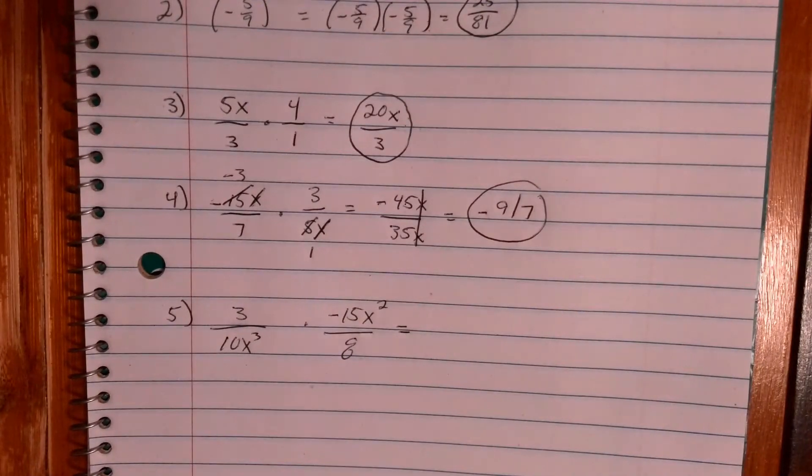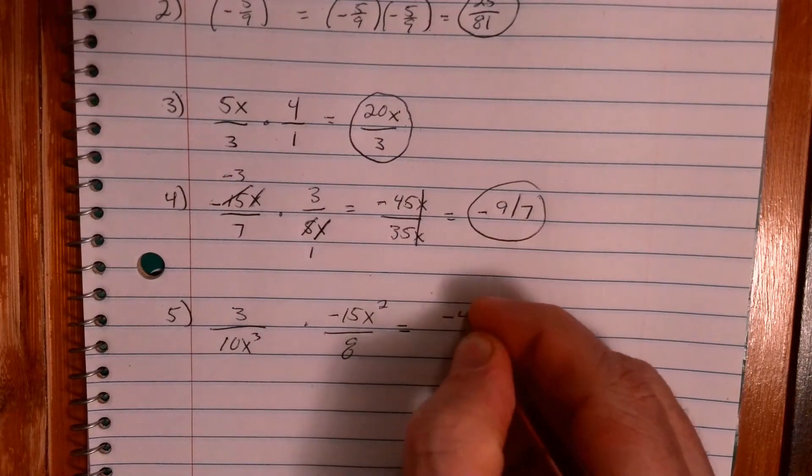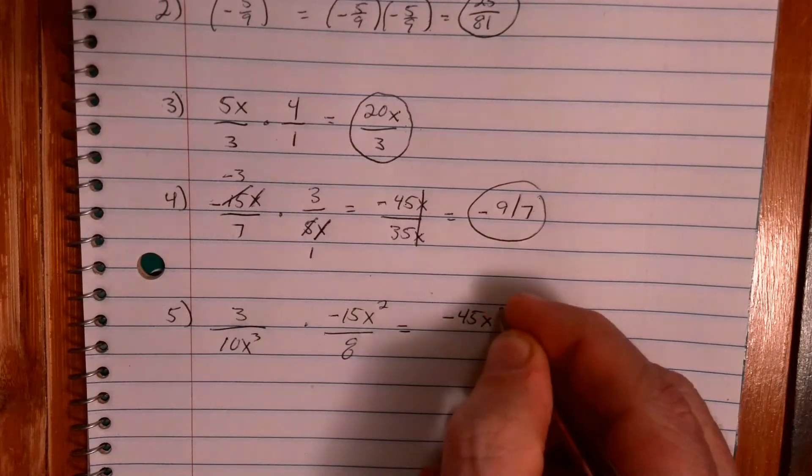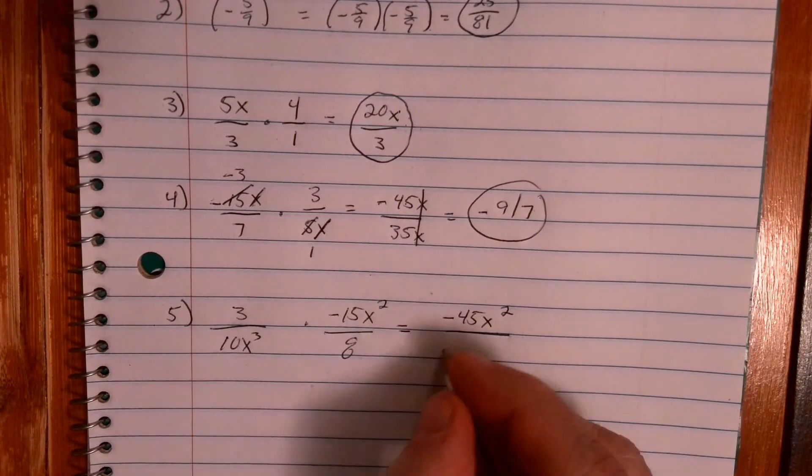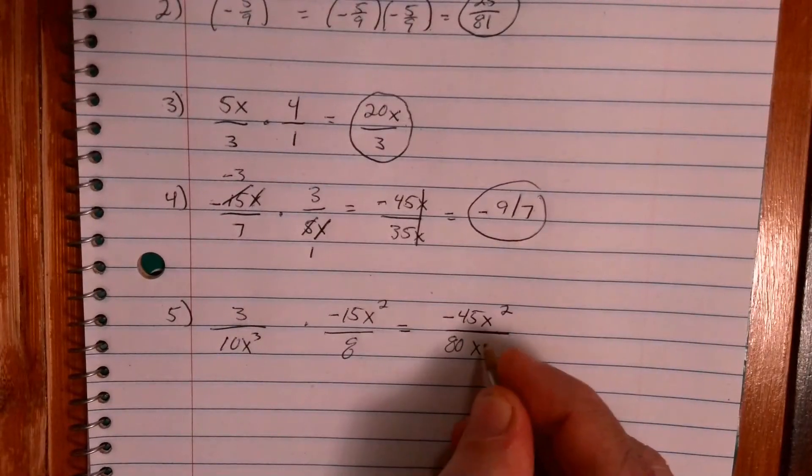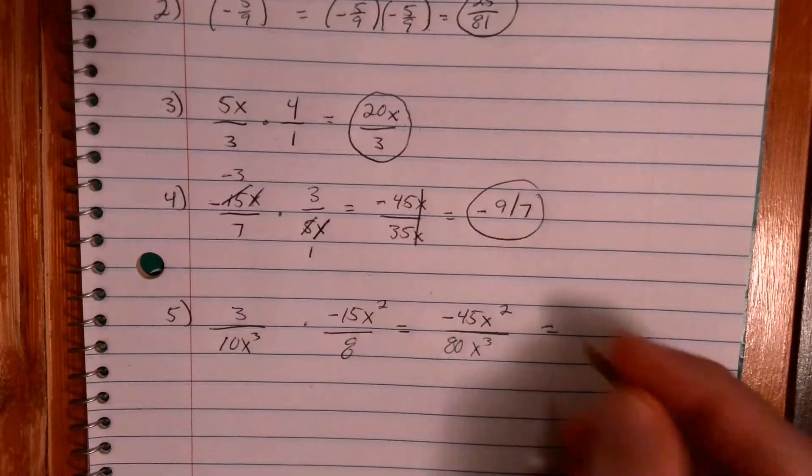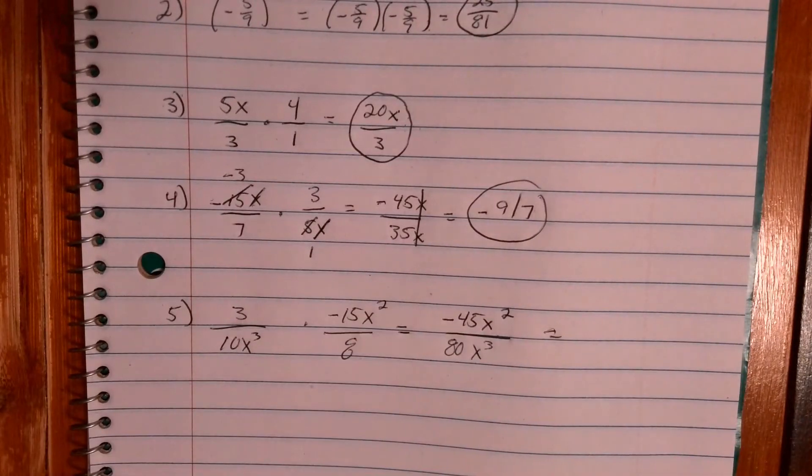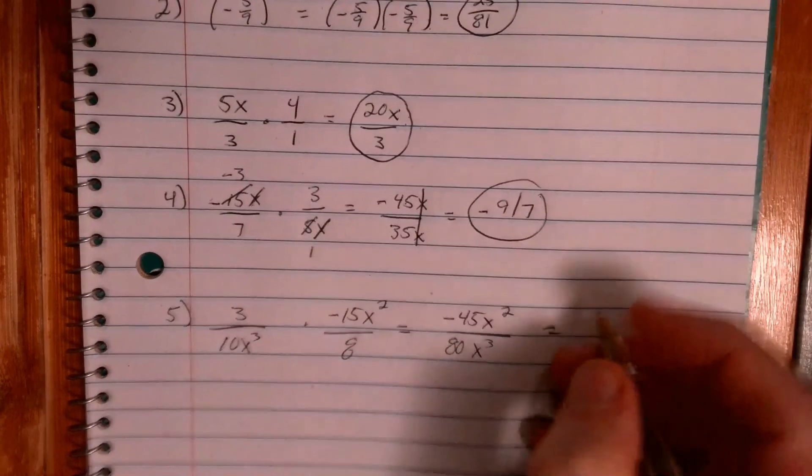So first, if you're not a canceling person, right, if you just want to multiply straight across, we can, right? So we can take 3 times negative 15 to make that negative 45x squared over 10 times 8 is 80x cubed. Okay, now back to practice 4-4 if you remember that.